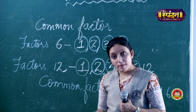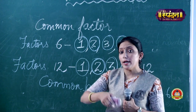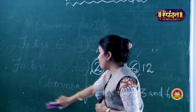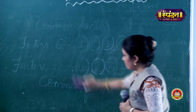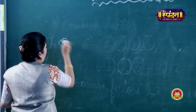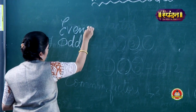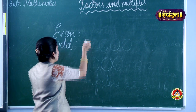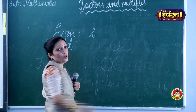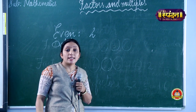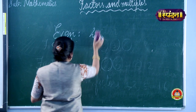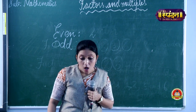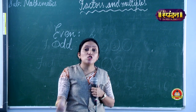Now let us look at odd and even numbers. Even numbers are those which are multiples of 2, that is, divisible by 2. For example: 2×1=2, 2×2=4, 2×3=6, 2×4=8, 2×5=10, 2×6=12. So all multiples of 2 are even numbers. If a number is a multiple of 2, it is even; if not, it is odd.